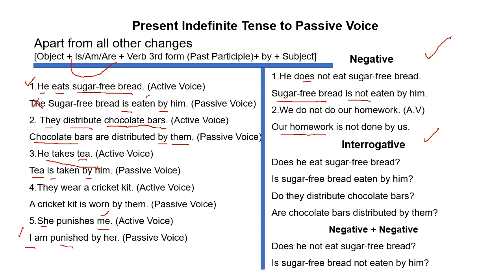Interrogative میں 'does' یا 'do' کی جگہ is/am/are subject کے مطابق لگائیں گے۔ 'Does he eat sugar free bread?' → 'Sugar free bread' آگے آئے گا، چونکہ سوالیہ ہے تو 'is' شروع میں لگے گا: 'Is sugar free bread eaten by him?' 'Do they distribute chocolate bars?' → 'chocolate bars' plural ہے تو 'are' پہلے آئے گا: 'Are chocolate bars distributed by them?'